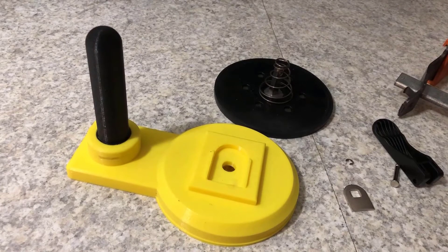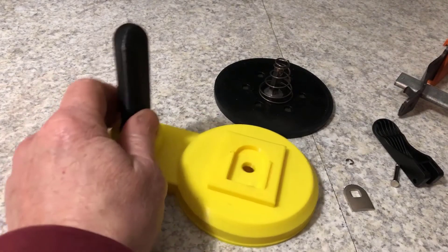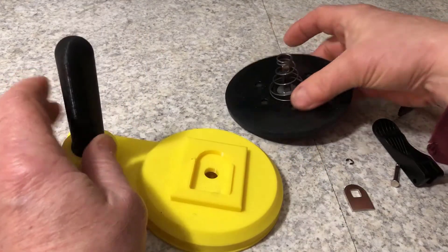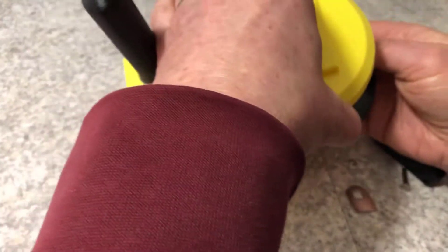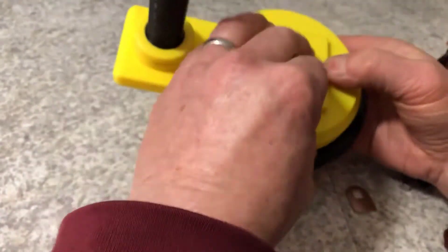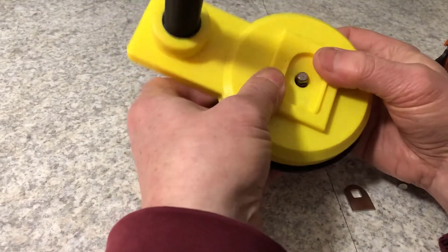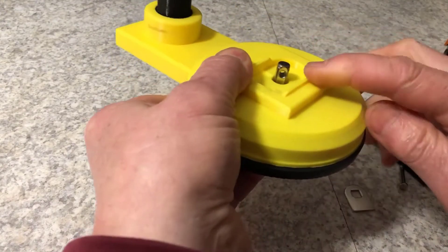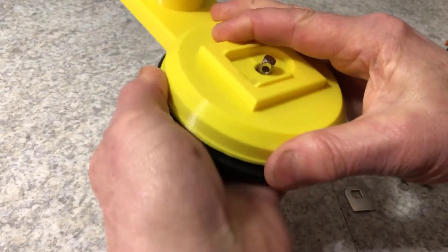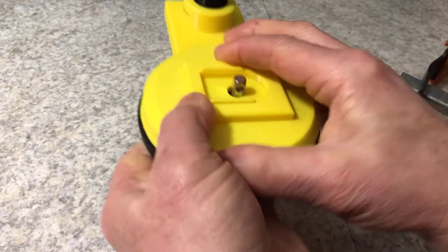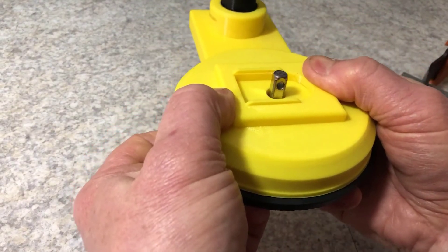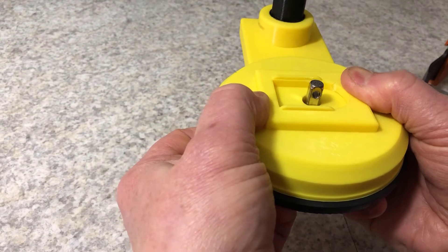So to reassemble, we take our base and we're going to take the suction cup assembly and fit that through the hole. Something to be careful of is that we want to make sure that we rotate our suction cup assembly so the hole is similarly placed.